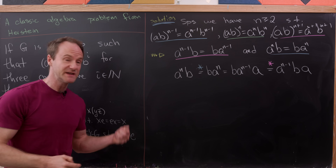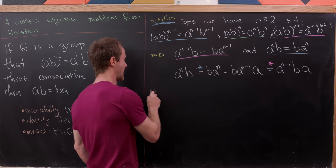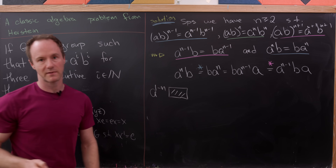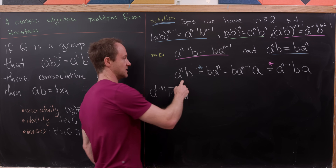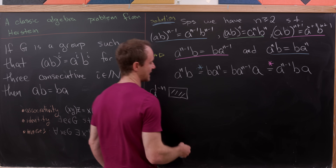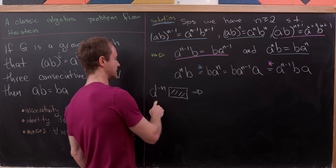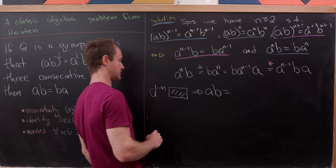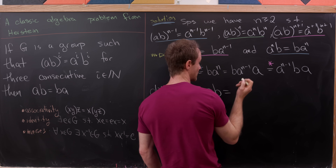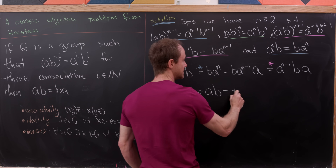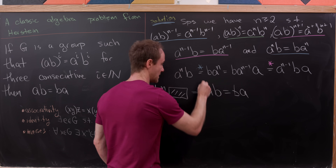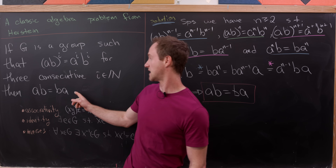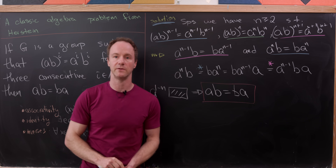Now we left-multiply both sides of that equation by A^(1-n). Notice A^(1-n) times A^n equals A, giving us A times B on the left. And A^(1-n) times A^(n-1) is the identity, giving us B times A on the right. We've achieved our goal: A times B equals B times A, which is exactly what we wanted to show.